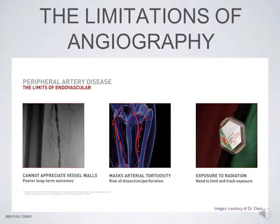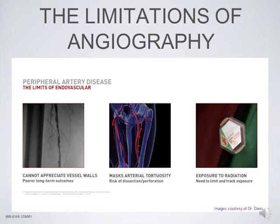Angiography is the mainstay of what we've been trained on for interventions, but it has limitations. You can't appreciate vessel walls, and it's a two-dimensional view of a three-dimensional vessel, making it difficult to ascertain disease severity without multiple views. It masks tortuosity — you can see what the SFA looks like when the leg is bent versus straight. And exposure to radiation is a significant problem for both patient and physician.